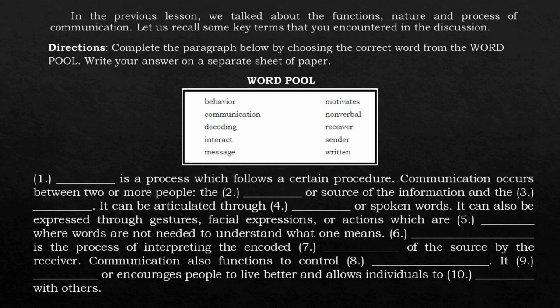In the previous lesson, we talked about the functions, nature, and process of communication. Let us recall some key terms that you encountered in the discussion. Directions: Complete the paragraph below by choosing the correct word from the Word Pool. Write your answer on a separate sheet of paper. Word Pool: Behavior, Communication, Decoding, Interact, Message, Motivates, Nonverbal, Receiver, Sender, Written.